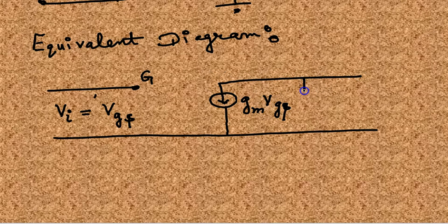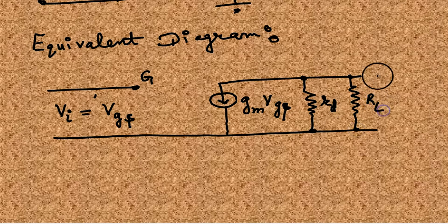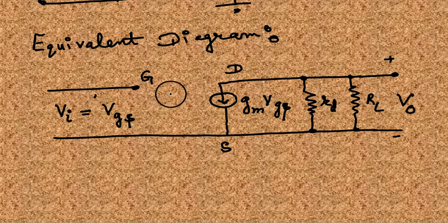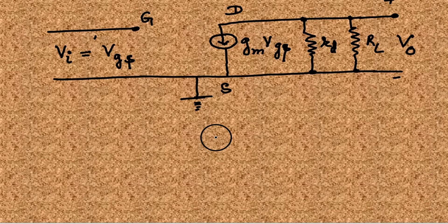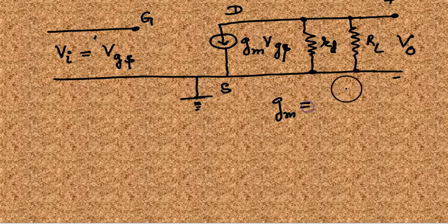GM, this is a current source. GM times VGS becomes the drain current. This is the drain resistance, this is RL. And here is the output. This is the source, this is the drain, and the source is grounded.